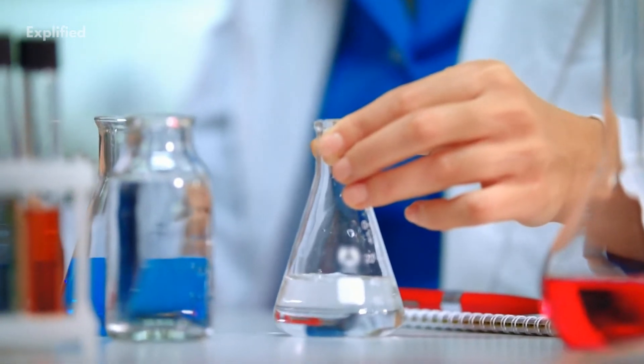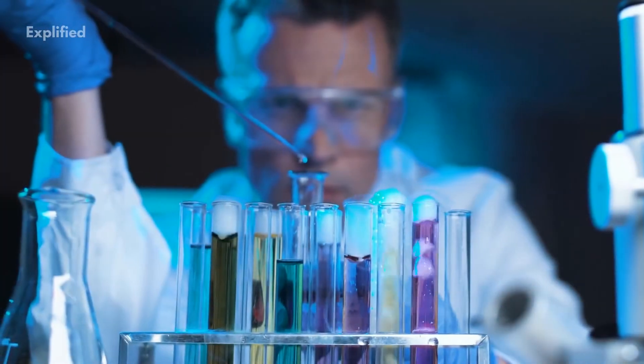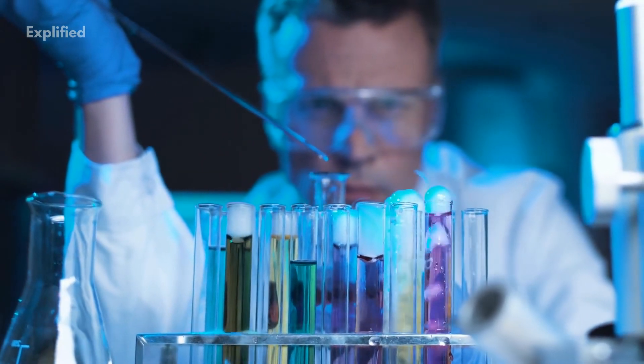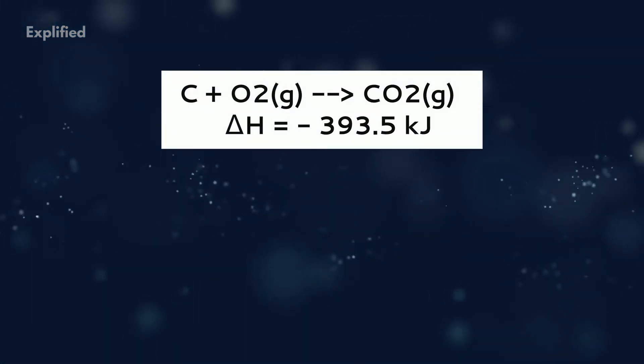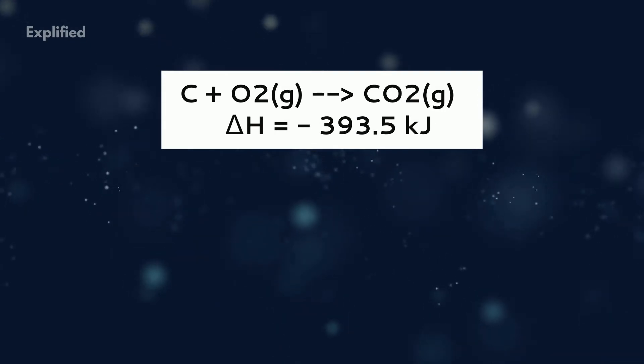Since delta H is a state function, it is not dependent on the way reactions are carried out. Let us carry out the reactions as follows. For the formation of CO2 directly, C plus O2 gives CO2, where delta H equals minus 393.5 kilojoules.